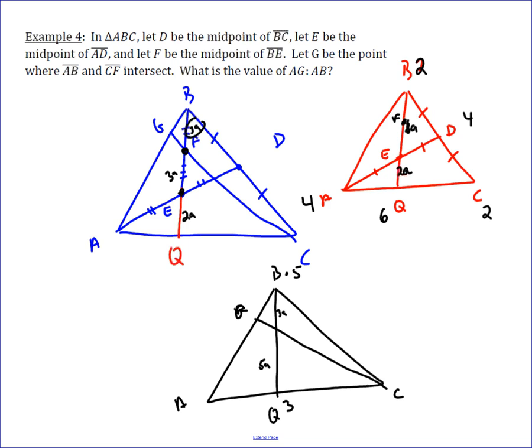But then we also know from what we found out in this picture that the ratio of AQ to QC is 1 to 2. And so since this has a mass of 3, then we need to give A a mass of 2 and C a mass of 1 because 2 plus 1 has to equal 3, and it needed to give you this 1 to 2 ratio.